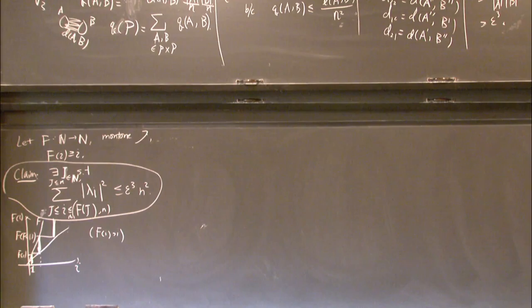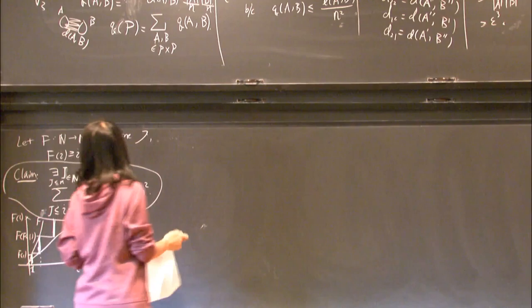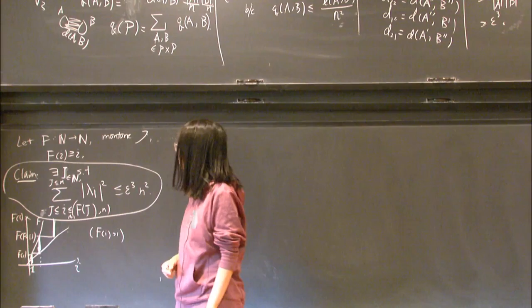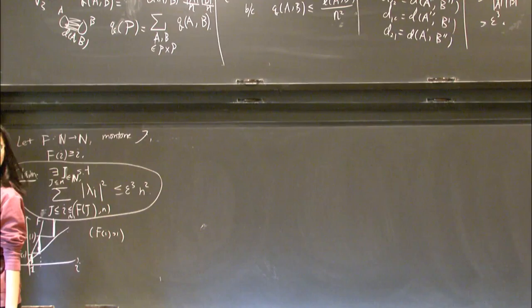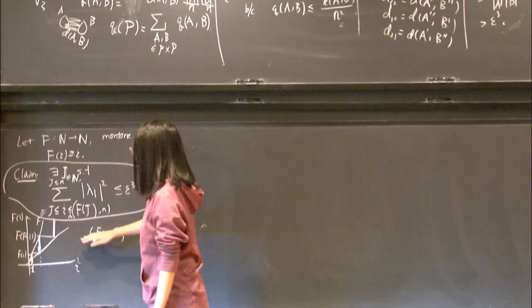The epsilon in the claim comes in because we iterate at most 1/epsilon² steps before finding an interval where the sum is small. The index j bounds the size of the resulting partition. If f(1) = n you just pick j = n and use lambda_n², which is fine. The function f governs how finely you can chop and ultimately determines the size of the partition.